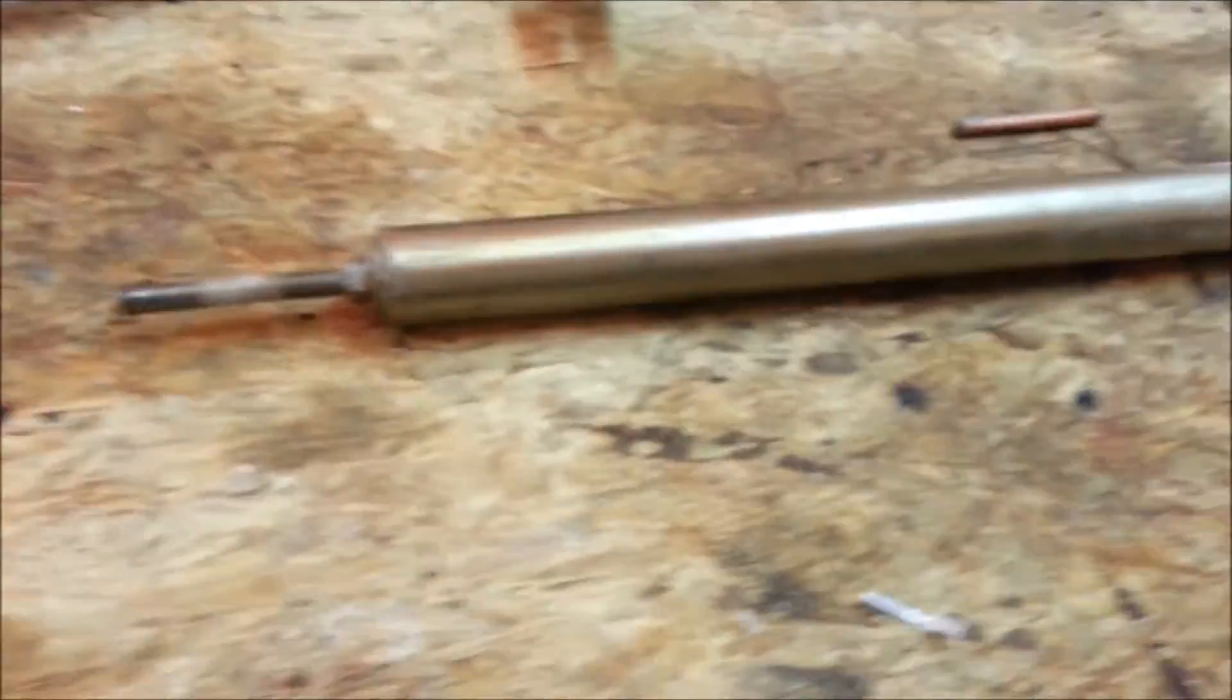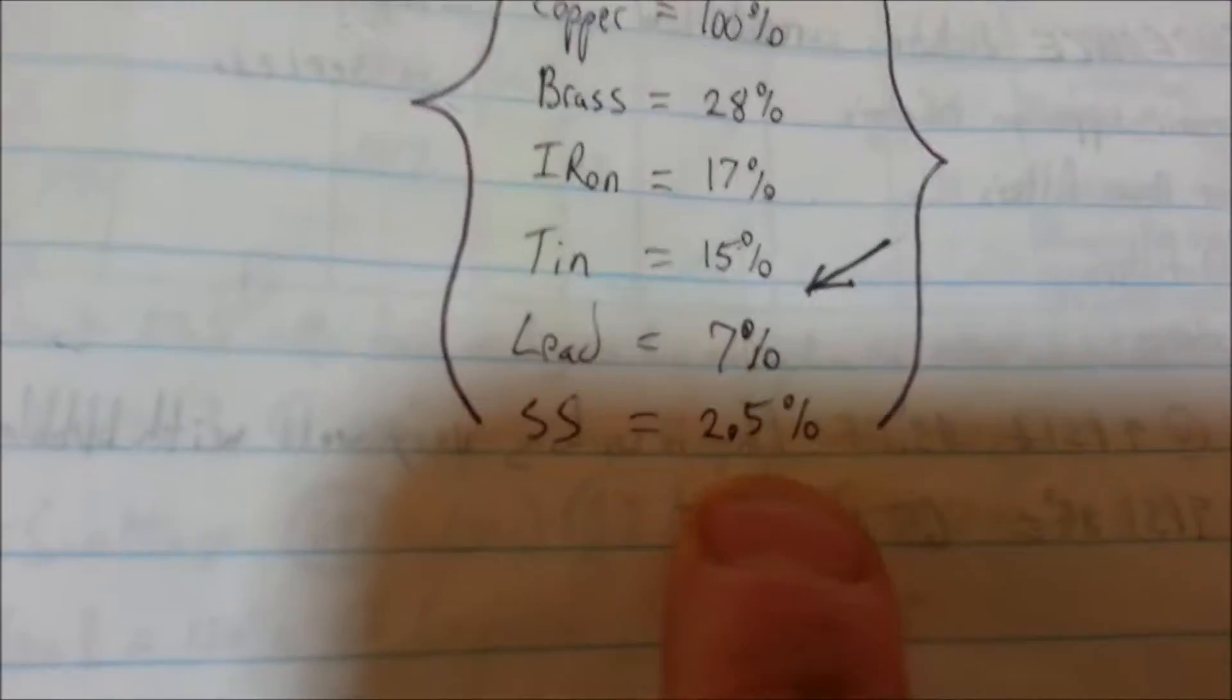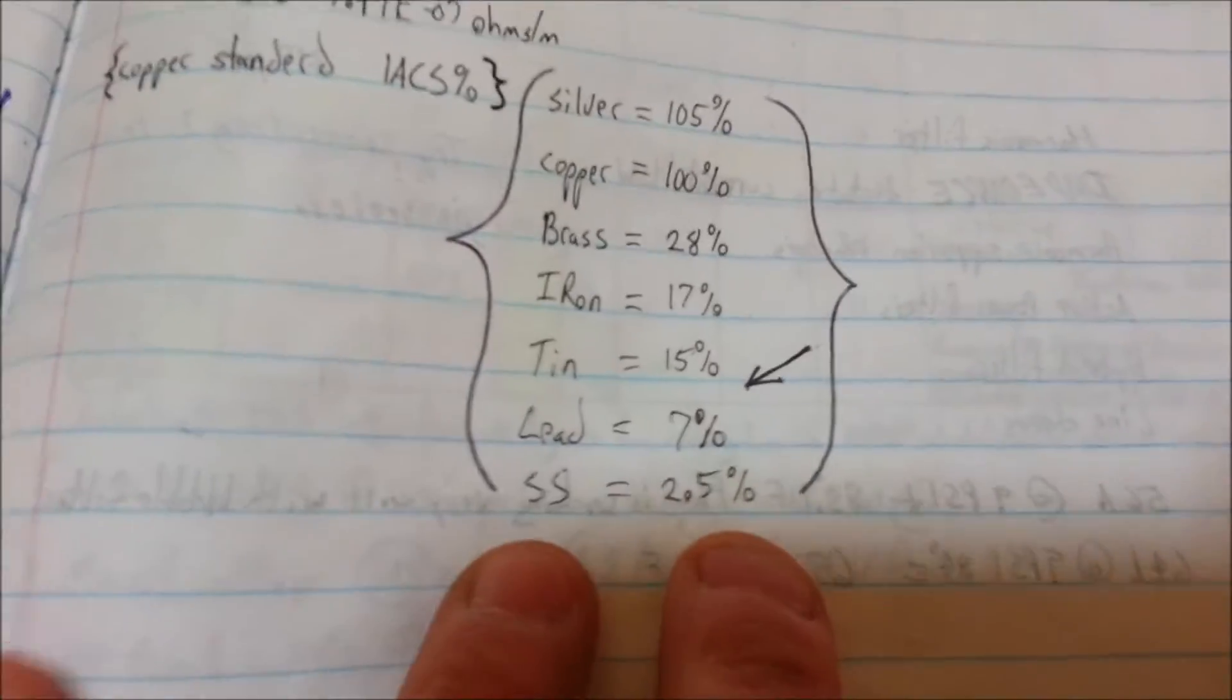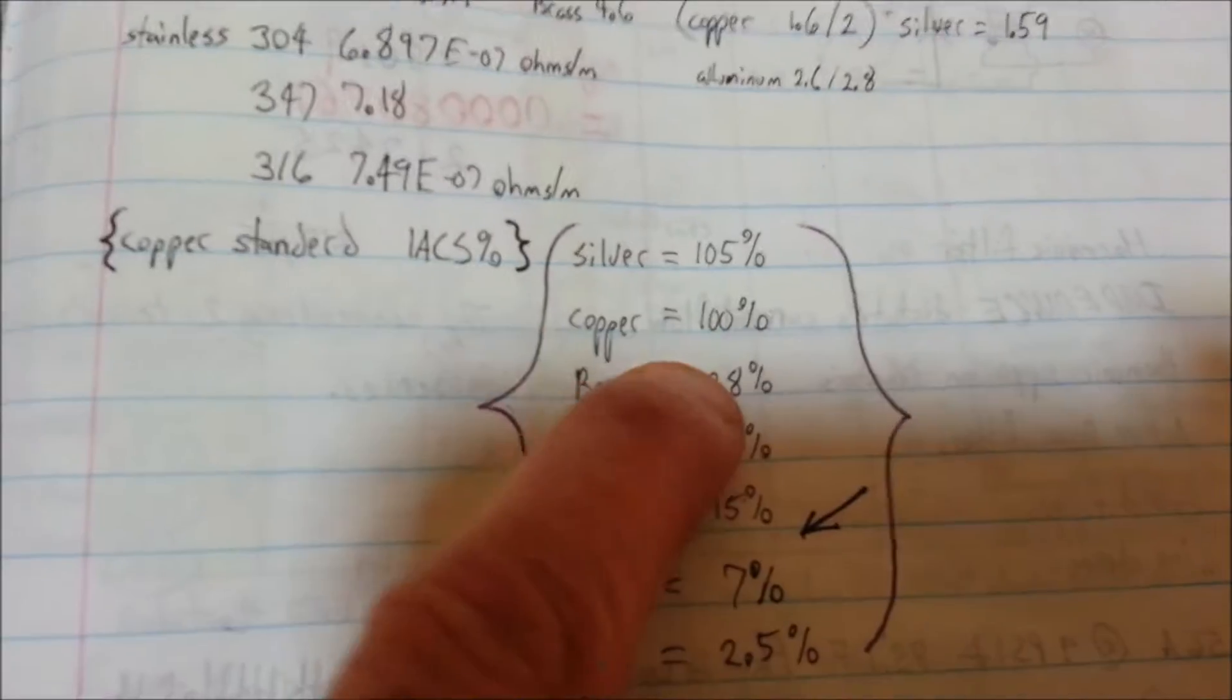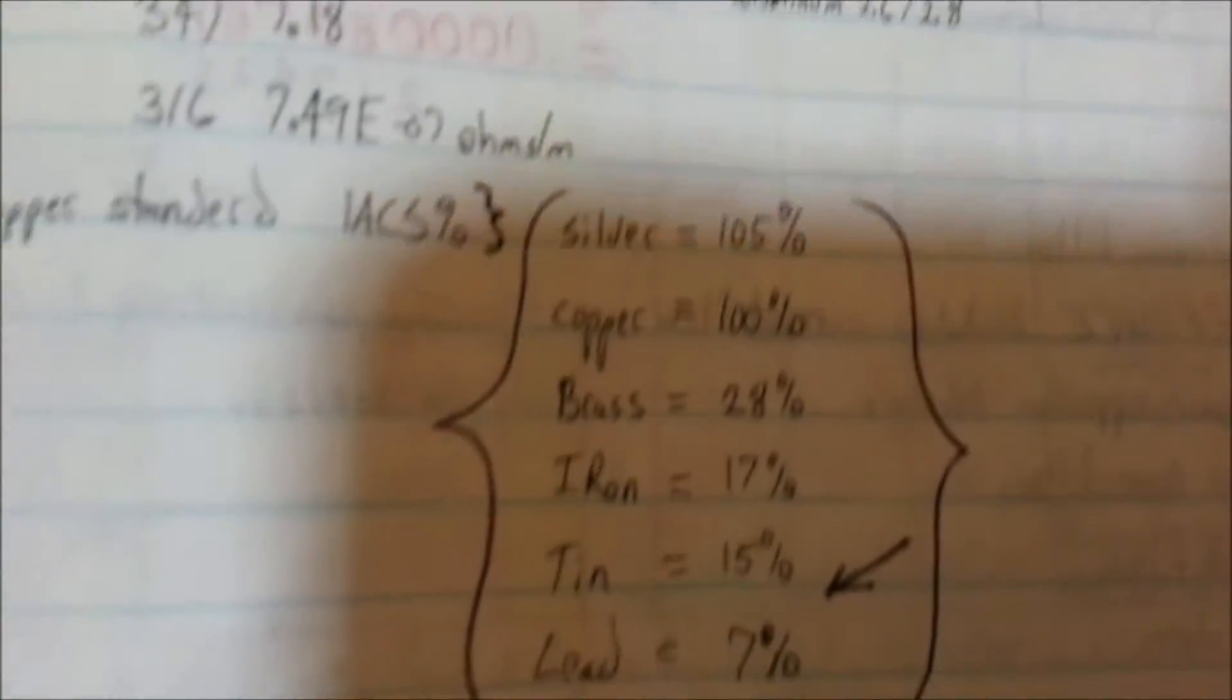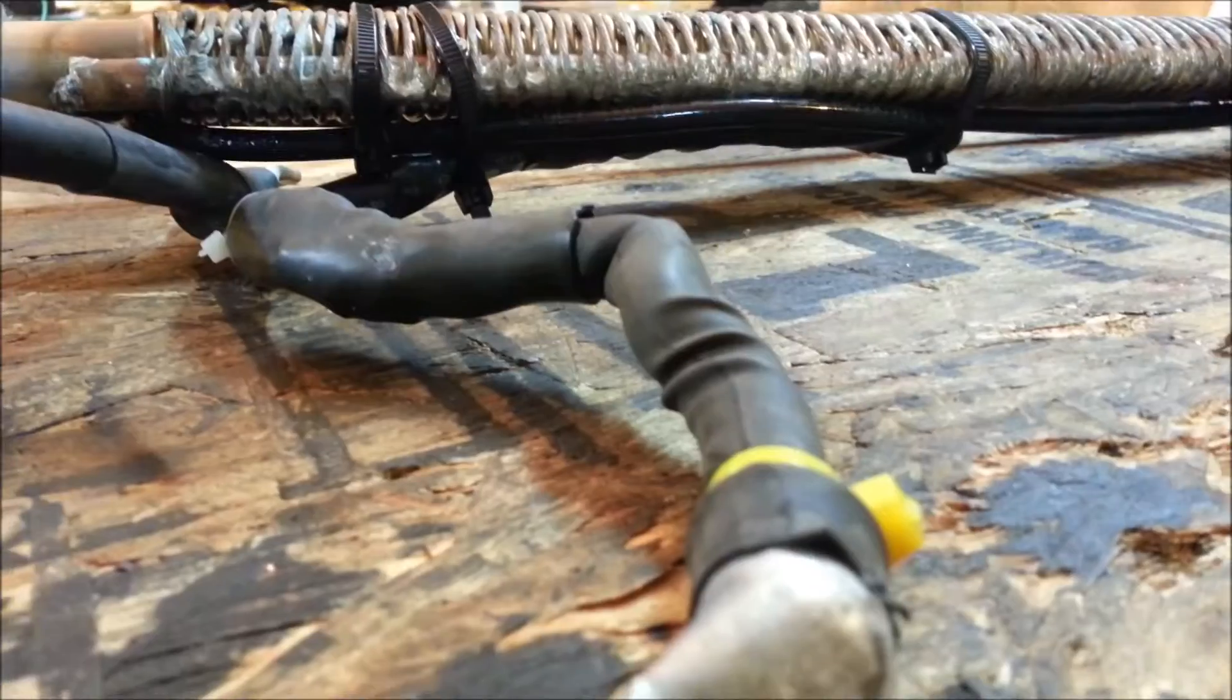One of the problems with this stud is that it's made entirely of stainless steel, and if you look here, the conductivity of stainless steel using the copper standard is 2.5. That is horrible as far as conductivity goes. Silver is 105% of the conductivity of copper. This is called the copper standard conductivity chart, and it shows you how conductive certain metals are in relation to copper wire.